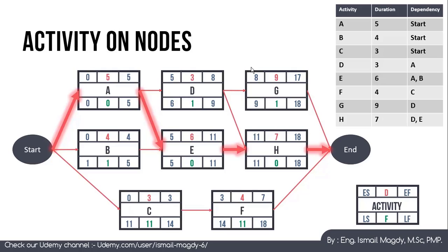This may seem a little confusing at first, but you just need to start practicing with the quiz for this chapter. If you face any difficulties, let me know in the questions below the video. This is the end of this chapter. Starting from the next lecture, we will learn scheduling control techniques such as crashing and fast-tracking, and then cost control techniques such as Earned Value Analysis. See you in the next video — thank you.